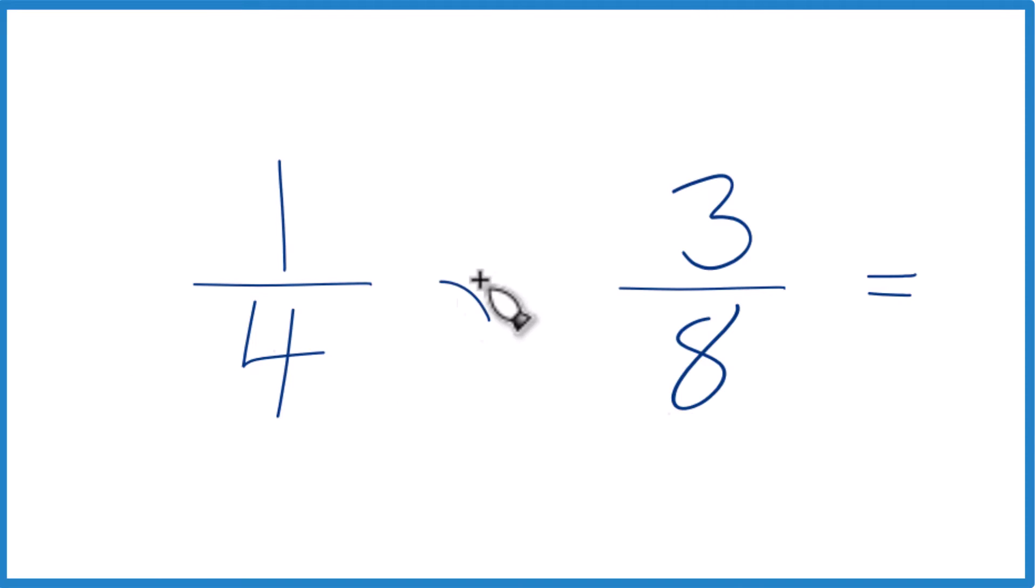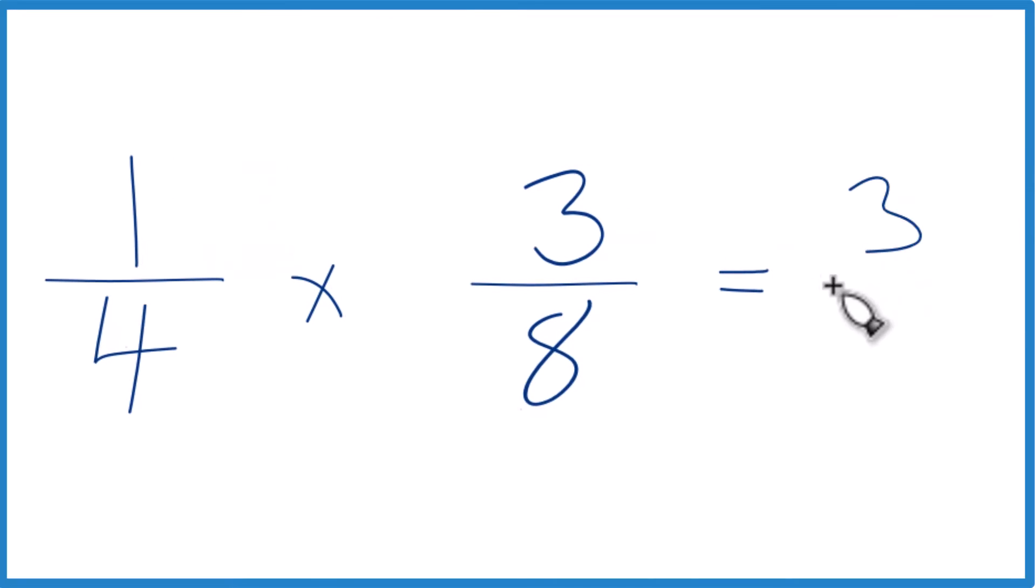So one-fourth times three-eighths. It's the same thing. Now it's not so bad. We take the numerators, we multiply 1 times 3, that gives us 3, and then we take the denominators, multiply those across. 4 times 8, that is 32.